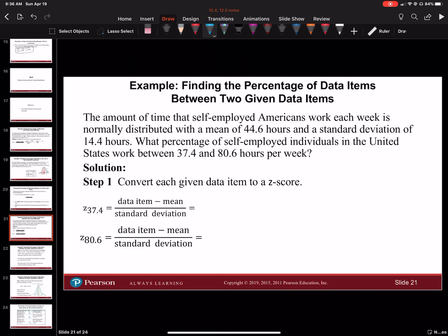The amount of time that self-employed Americans work each week is normally distributed with a mean of 44.6 hours and a standard deviation of 14.4 hours. What percentage of self-employed individuals in the United States work between 37.4 and 80.6 hours per week?